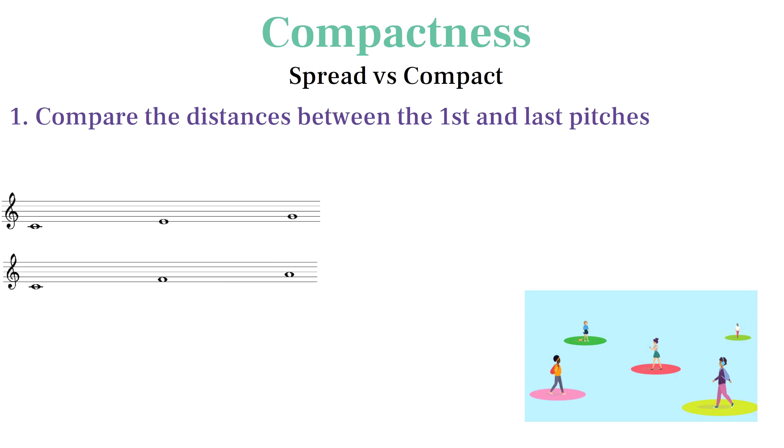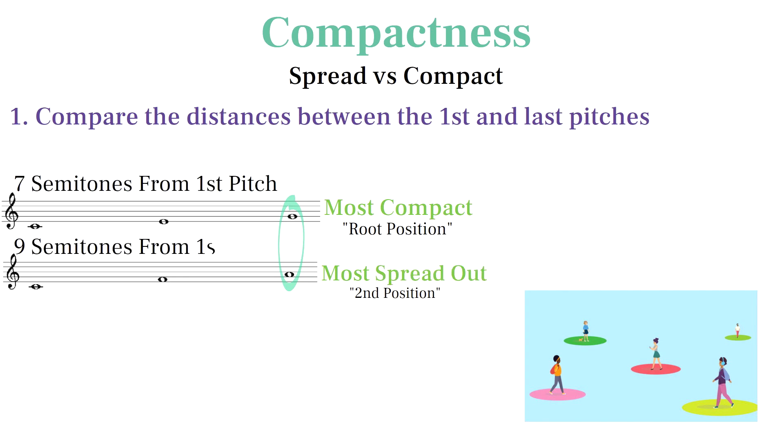When we compare the modes of the major triad, we see that the root position mode is most compact because it spans the shortest distance from C to G, while a second position major triad is the most spread out because it spans the largest distance from C to A.